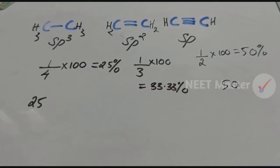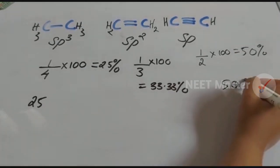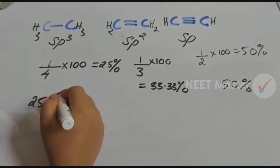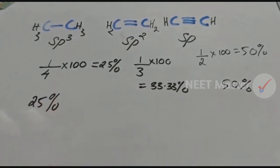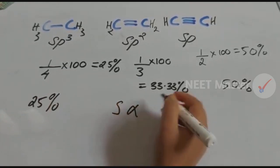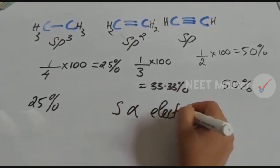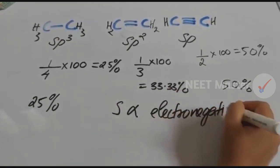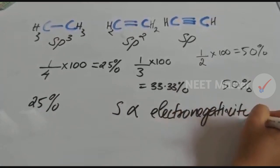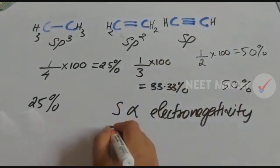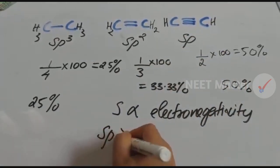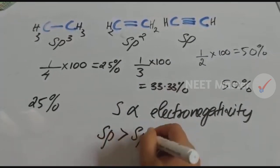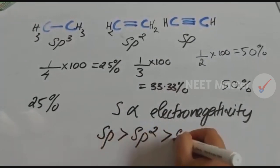The S-character for SP hybridization is 50%. For SP2 it is 33.33%, and for SP3 it is 25%. S-character is directly proportional to electronegativity. So the order of electronegativity follows: SP > SP2 > SP3.